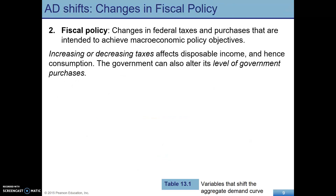We also have fiscal policy — basically the spending and taxation of the government. Increasing or decreasing taxes affects disposable income, which is how much income you have left over after paying taxes. So taxation affects consumption: if taxes go up, that reduces consumption and AD falls; if taxes fall, that increases consumption and AD rises.